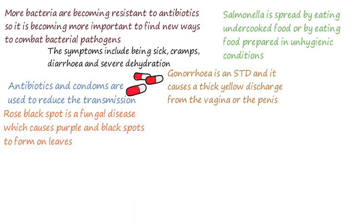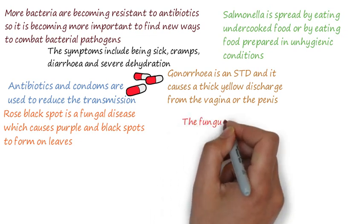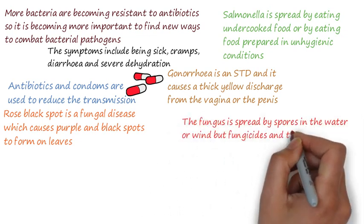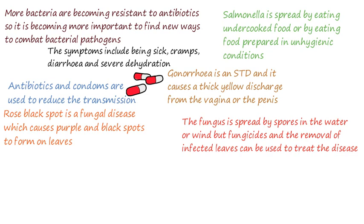Fungal diseases mainly affect plants. Rose black spot is a fungal disease which causes purple and black spots to appear on leaves. These leaves then turn yellow and drop off the plant, which affects the plant's growth as photosynthesis is reduced. The fungus is spread by spores in water or wind. Fungicides, which are chemicals, and the removal of infected leaves can be used to treat the disease.